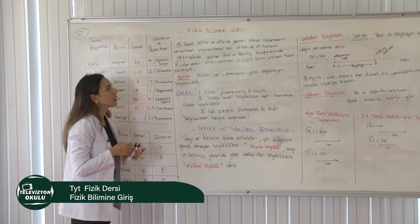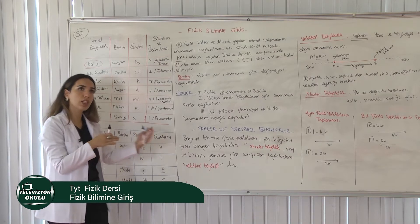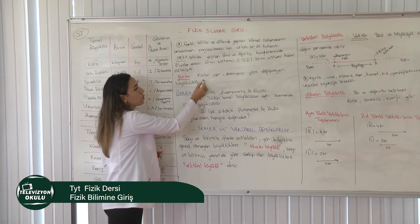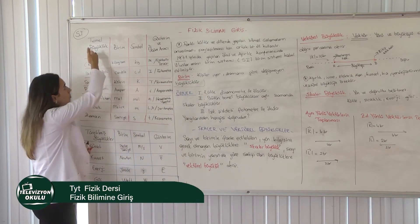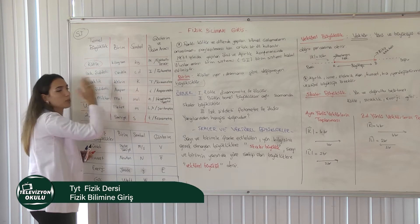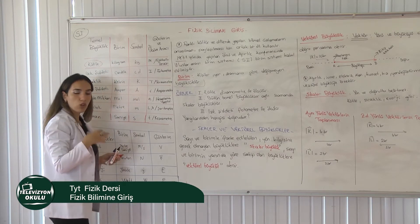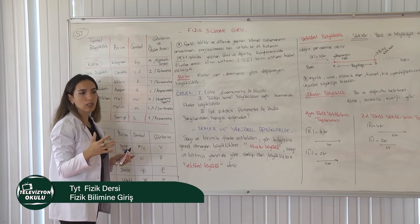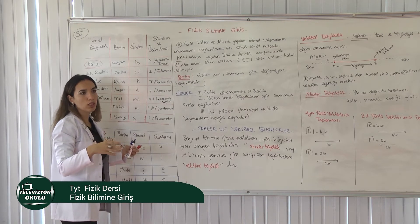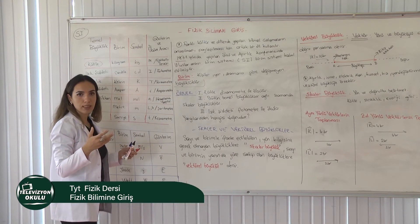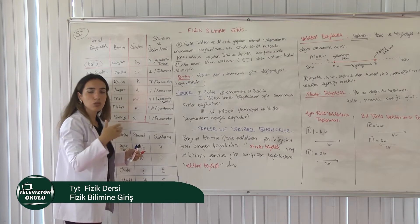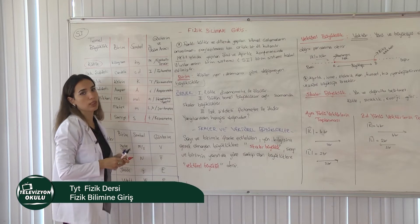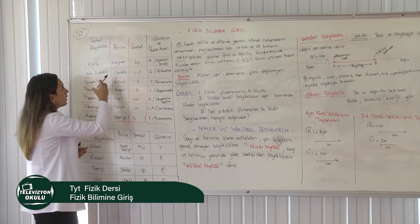Birim şu demek: kişilere göre, yere göre, zamana göre değişmeyen büyüklüklere biz birim diyoruz arkadaşlar. Dolayısıyla uluslararası birim sistemine göre buradaki bütün birimleri o şekilde yazdım. Normalde kilogram uluslararası birim sistemine göre kütlenin birimidir. Fakat biz kendimiz gram kullanabiliriz; uluslararası bir birim sisteminde ifade edilmek istenildiğinde bunu hemen dönüştüreceğiz.